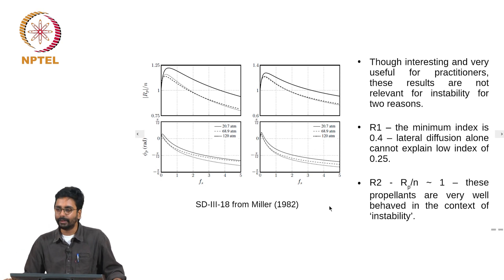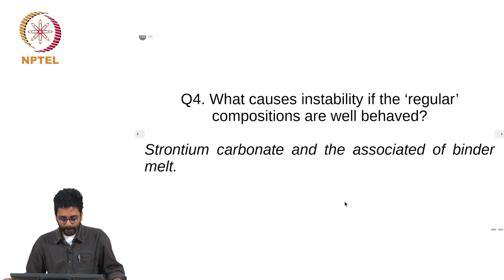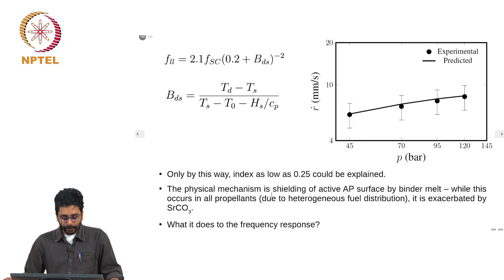Therefore, the only description I can think of for these propellants is that they are very well behaved as far as instability is concerned. So the question remains: what causes instability if the regular compositions are well behaved? It looks like the only thing that we have not accounted for so far in the model is the effects of the inhibitors. One particular inhibitor that I want to mention here is strontium carbonate and the associated binder melt, and of course it could be other inhibitors like oxamide also. What do they do?